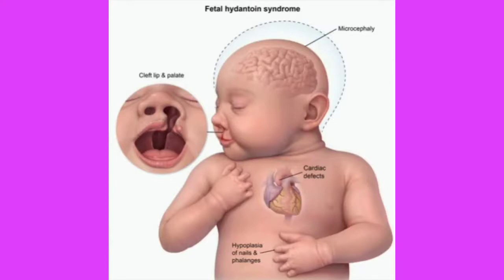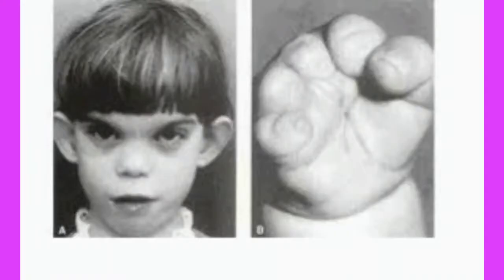Another feature is hypoplasia of the nails and phalanges. If you look at the fingers, toes, toenails, and fingernails, you will find that hypoplasia has occurred — meaning the growth has not occurred properly. Hypoplasia of the nails and phalanges is a very important feature of fetal hydantoin syndrome. In this picture you can clearly understand the hypoplasia of the fingers, phalanges, and nails.